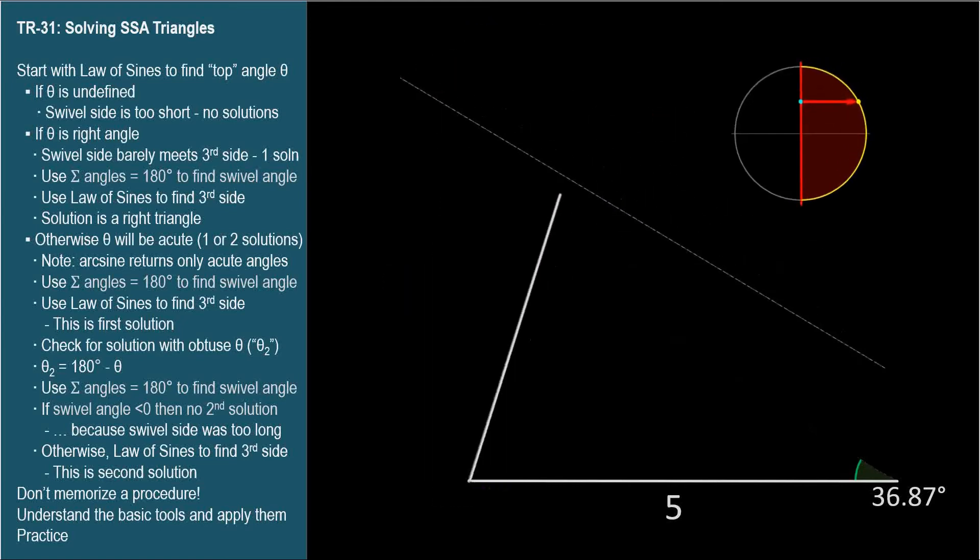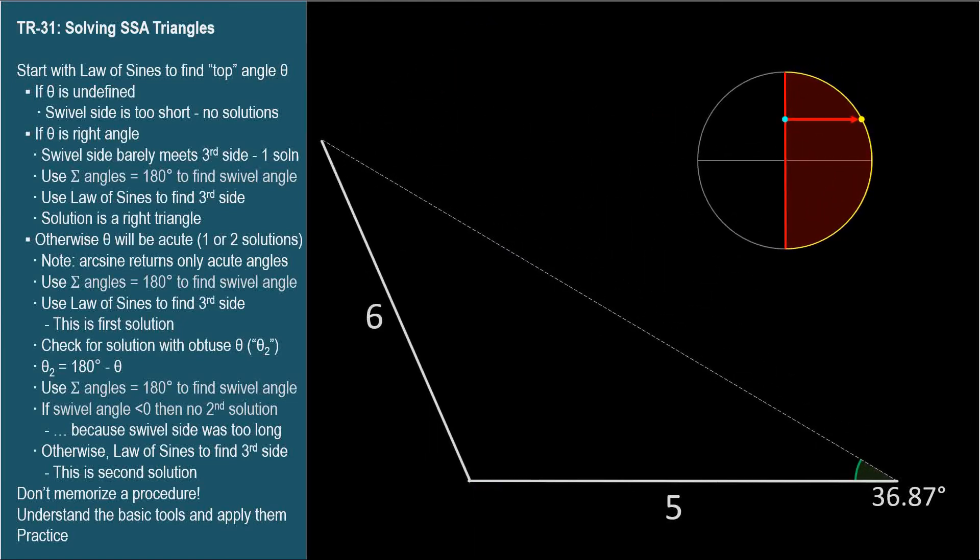The last scenario is when the swivel side is longer than the other given side, the one adjacent to the given angle. Let's say 6. If you happen to notice it's longer, then you can stop after you've found one solution, because it will be unique. But if you don't notice, I'll show you how to catch it.